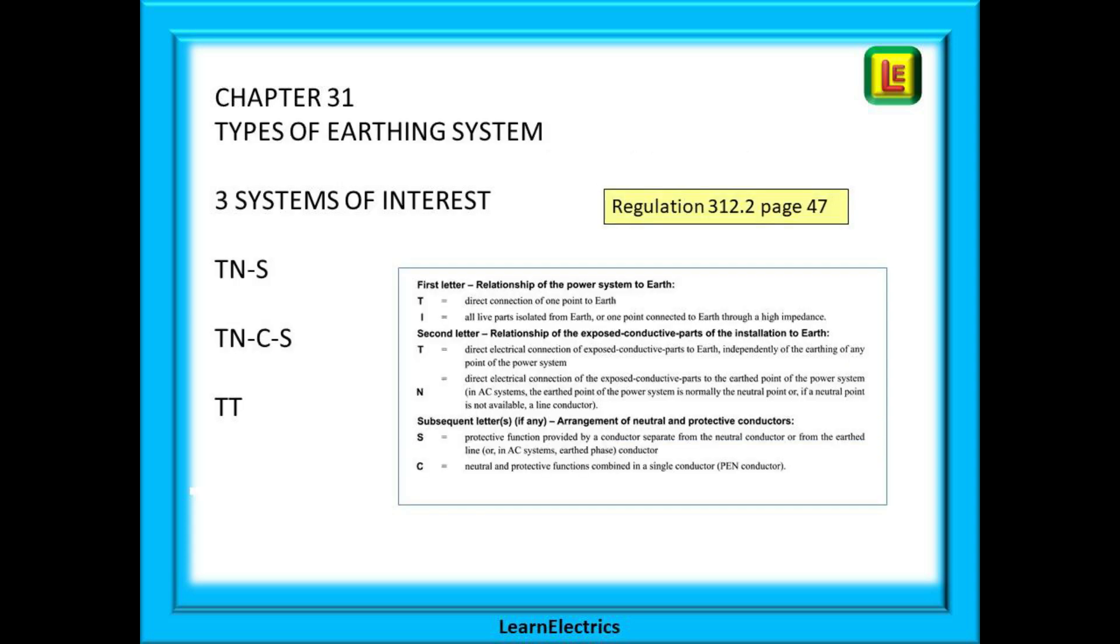Next the chapter looks at types of earthing systems. There are three systems of interest to us. TNS, TNCS and TT. There are two more specialised systems but they are not covered in the wiring regulations.